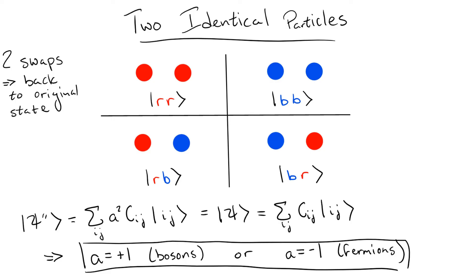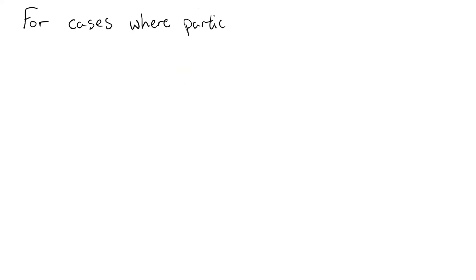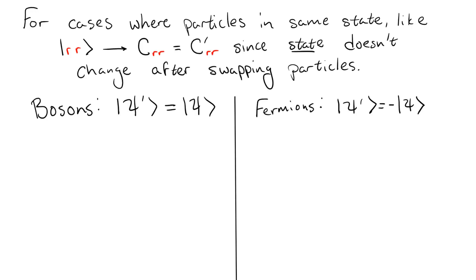Now, this has some very big consequences, but one of the most important is if we consider what happens when the two particles are in the same state, say both red. For bosons, when the particles are switched, nothing interesting happens. The state just looks the same.